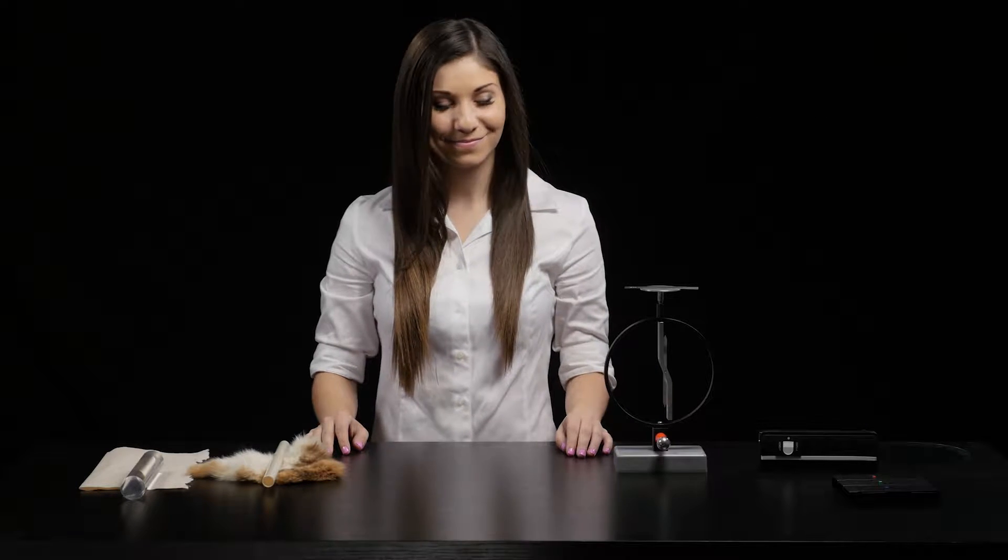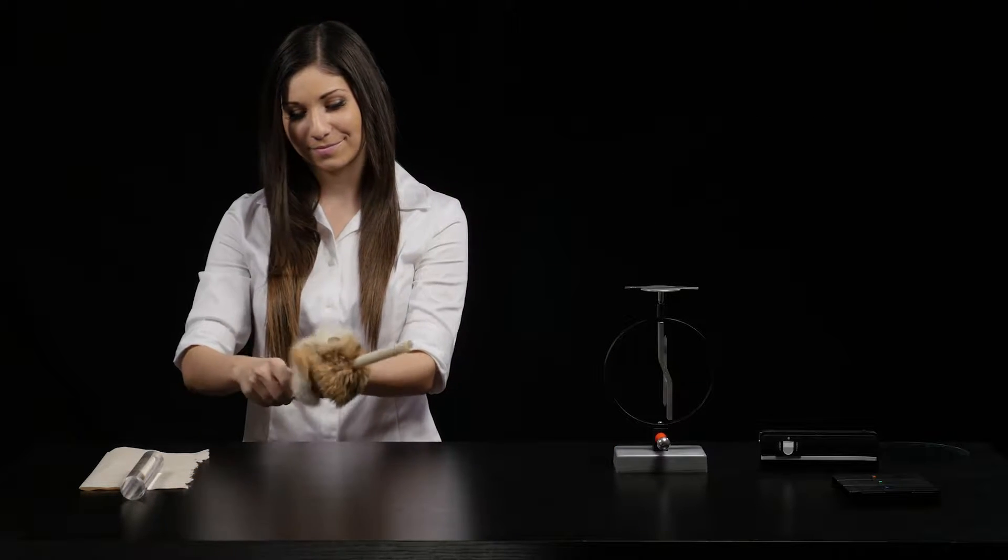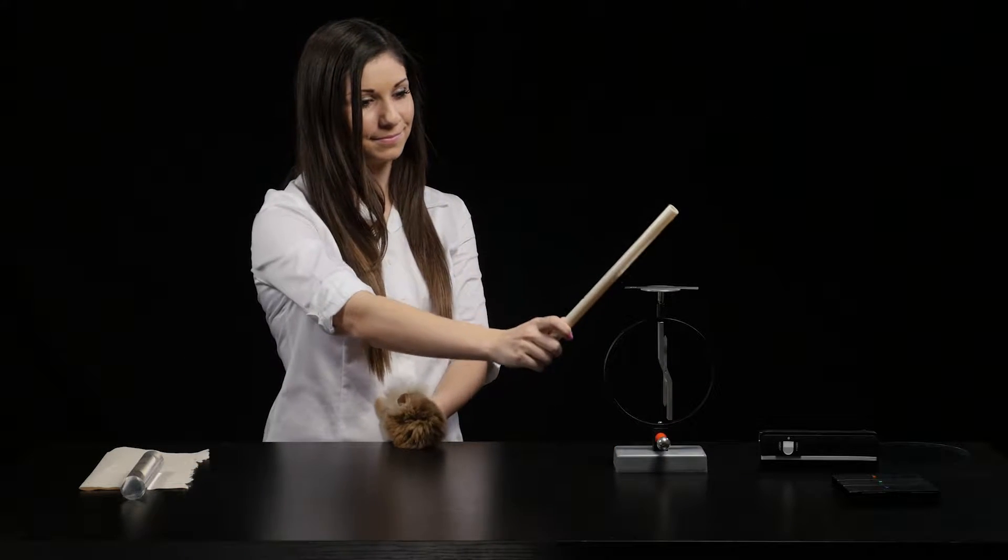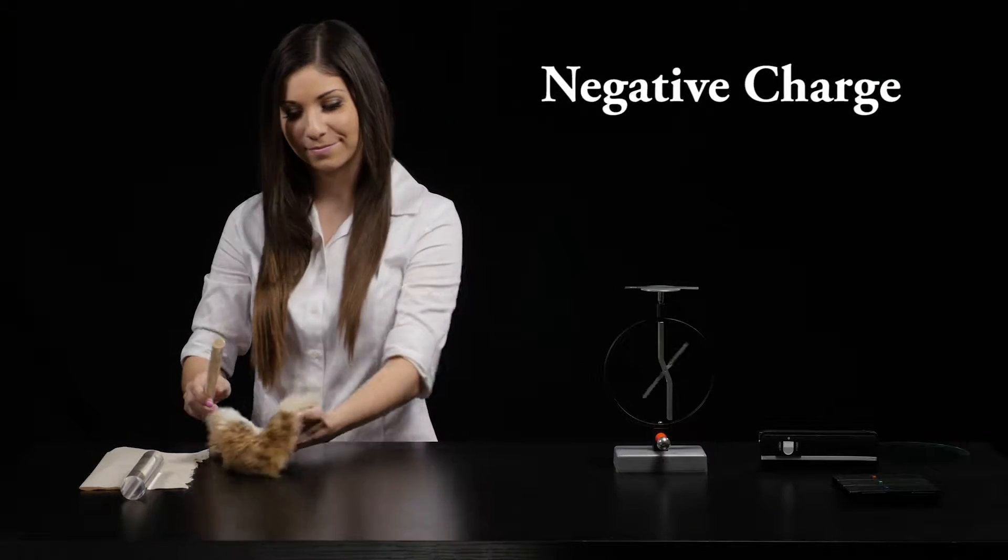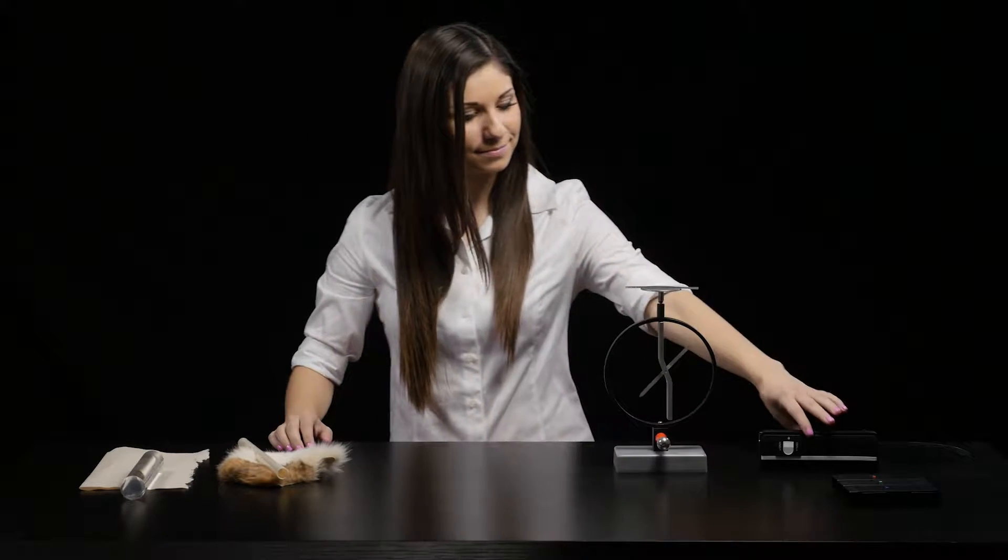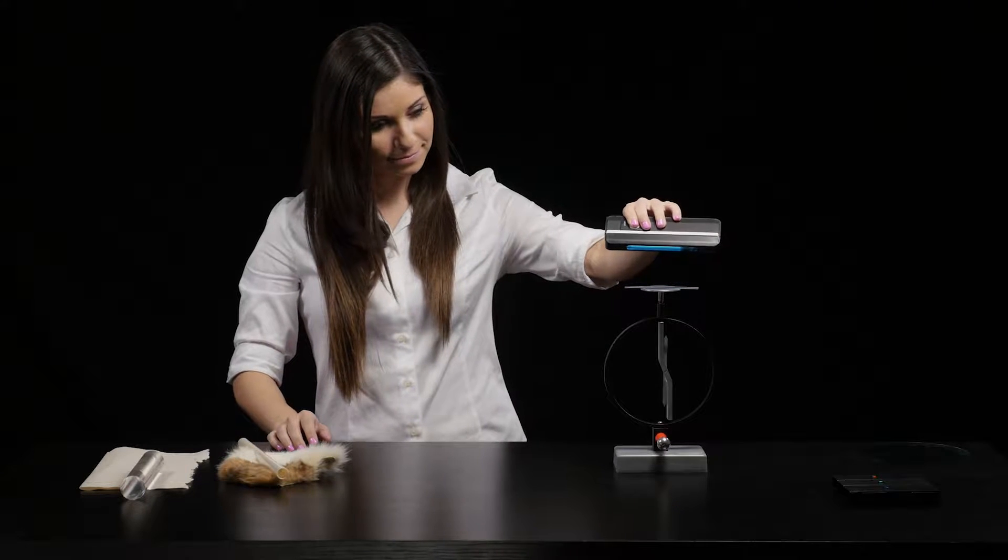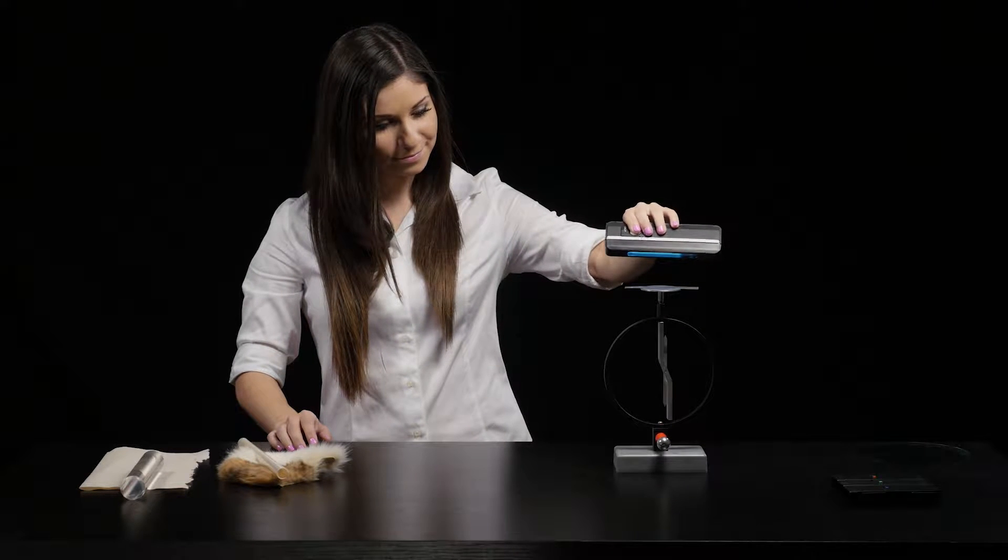This electroscope can be used to demonstrate the photoelectric effect. A PVC tube provides negative charge. When a shortwave ultraviolet lamp is turned on, electrons are ejected and the scope discharges.